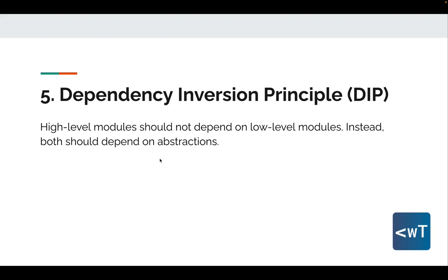The next principle is the Dependency Inversion Principle. It states that high-level modules should not depend on low-level modules — instead, both should depend on abstractions. Additionally, abstractions should not depend on details; details should depend on abstractions. The Dependency Inversion Principle advocates decoupling software modules by introducing abstractions that mediate their interactions, allowing for greater flexibility, extensibility, and testability. By adhering to DIP, we invert the traditional dependency flow, ensuring high-level modules are not tightly coupled to low-level implementation details.